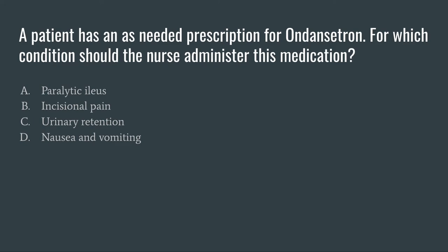C is urinary retention. Again, Zofran is an antiemetic and will not be used for urinary retention. D is nausea and vomiting. Before we even moved on to our answer choices, we knew that we would give Zofran for nausea and vomiting. So nausea and vomiting — D — is your correct answer.